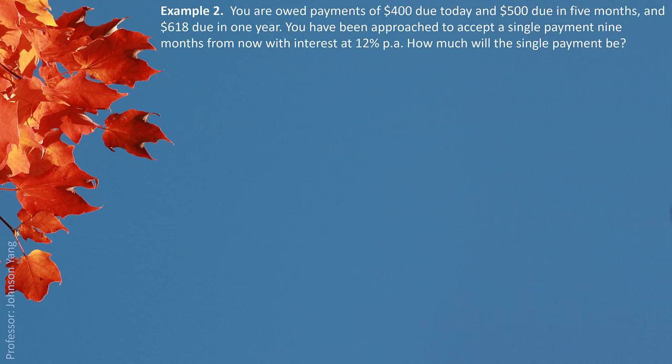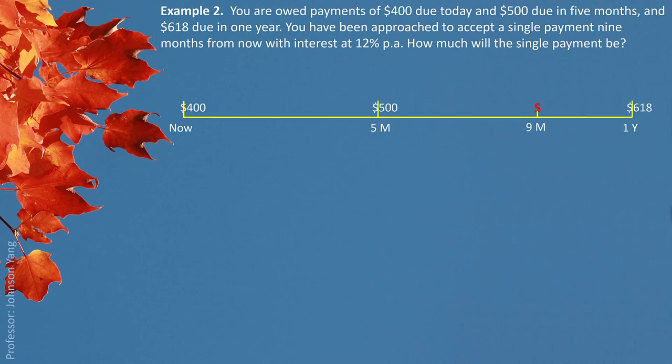Example 2. You are owed payments of $400 due today, $500 due in five months, and $618 due in one year. You have been approached to accept a single payment nine months from now, with interest at 12%. How much will the single payment be? Let's look at the structure.